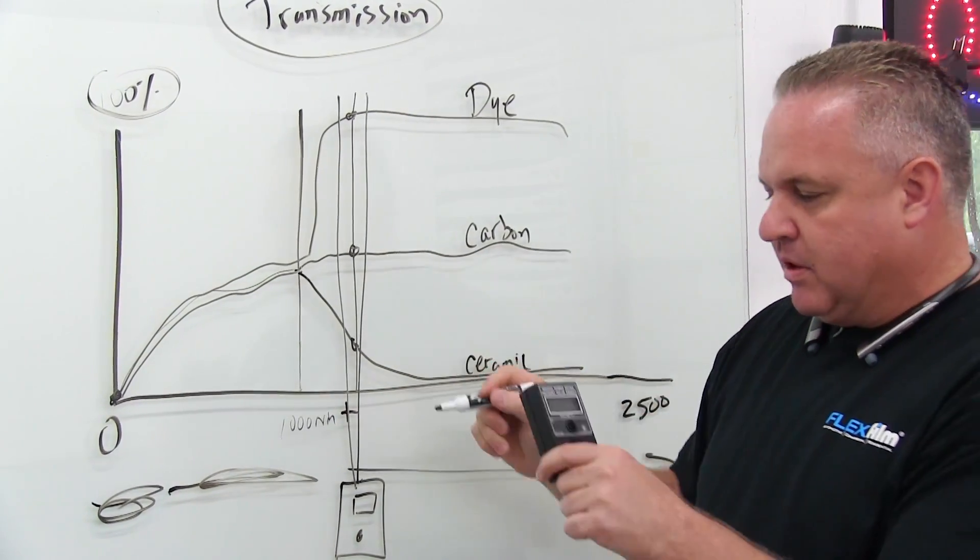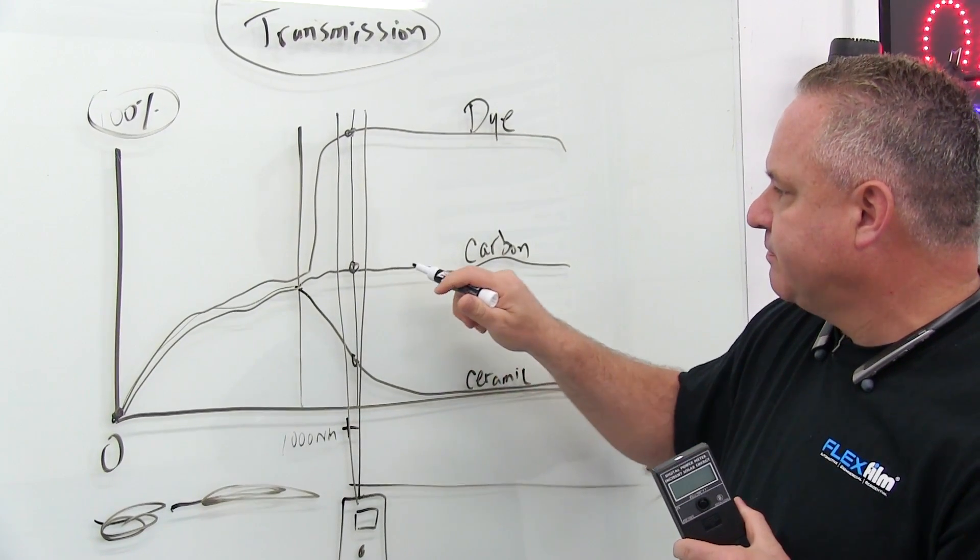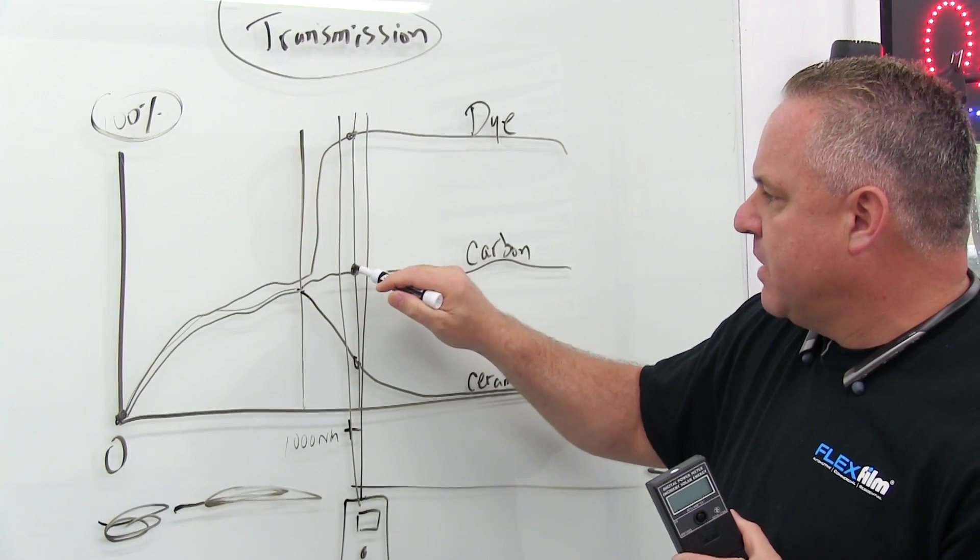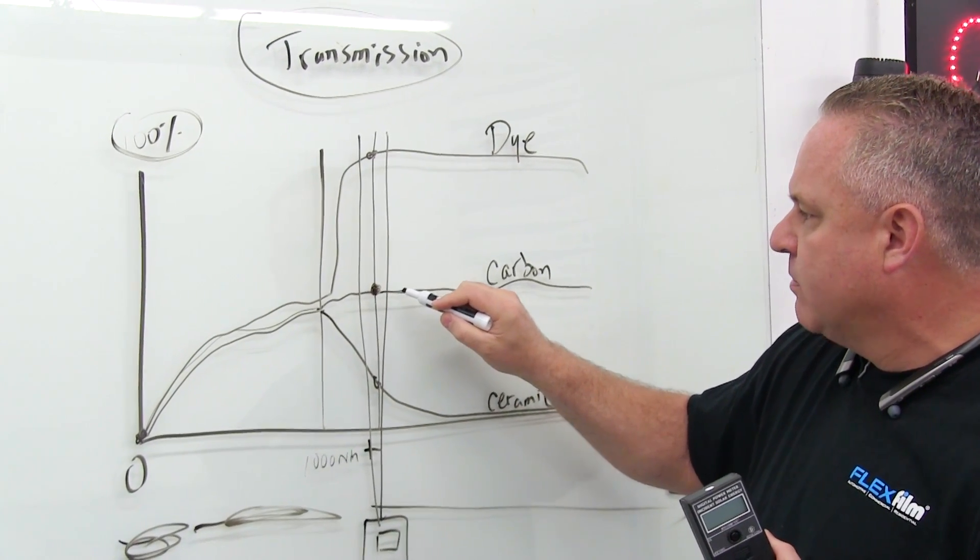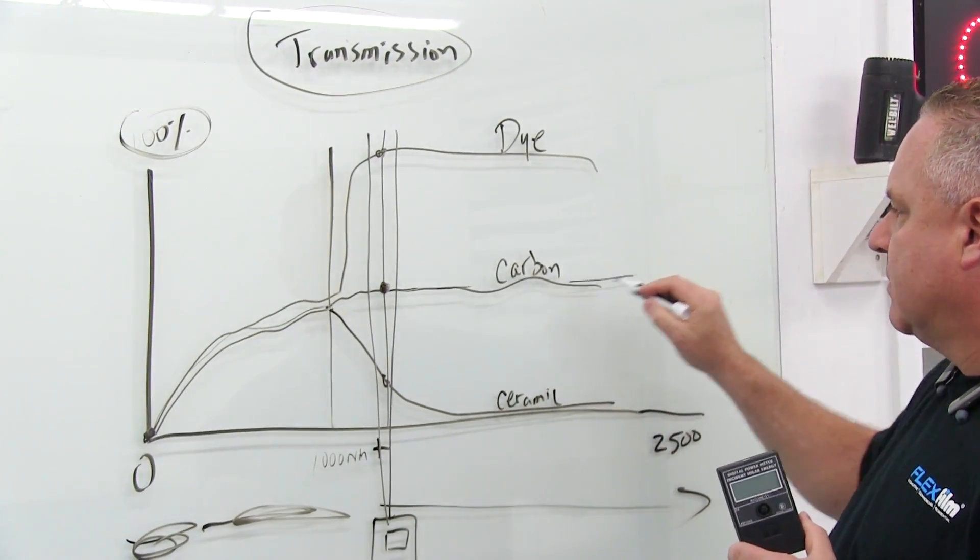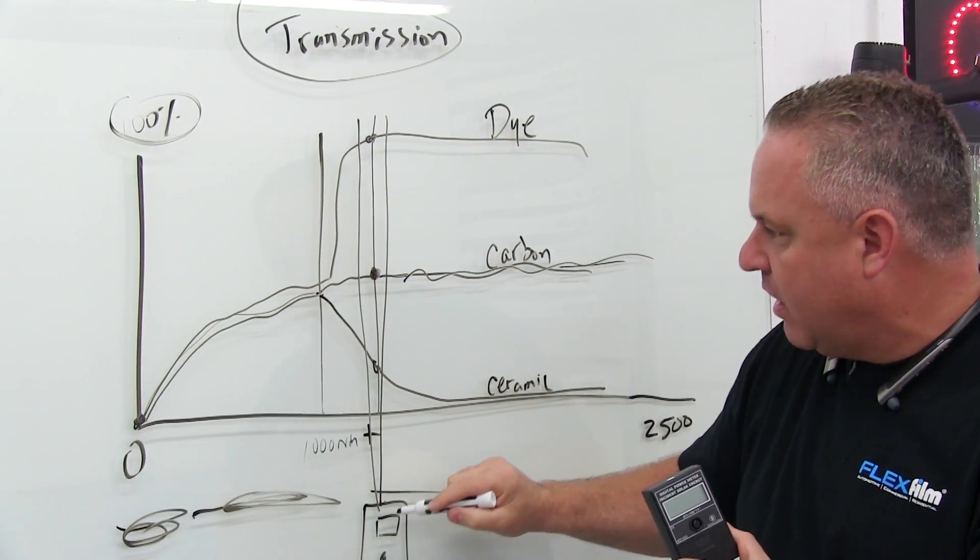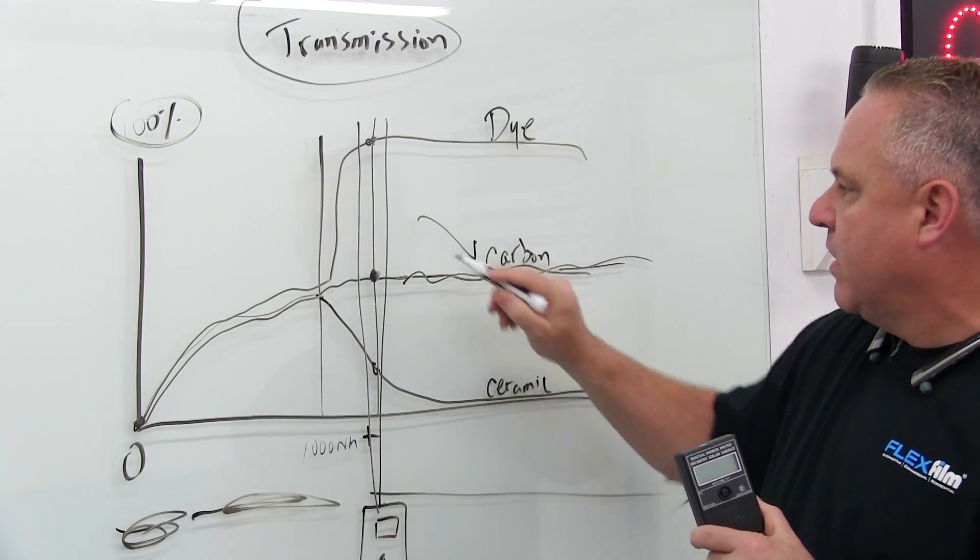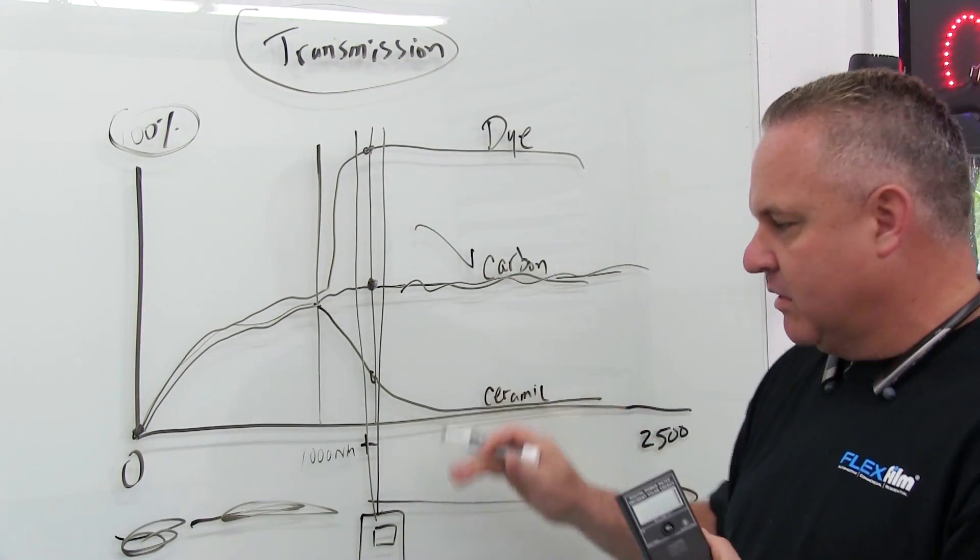But the problem is this. Well, let me tell you not the problem, this is the good news. This is where this meter makes sense. Because if it's reading a number here, this film sort of flatlines and it kind of stays really kind of on the same plane. So the number here usually is very accurate when it reads carbon films, most carbon films, not all, but most.